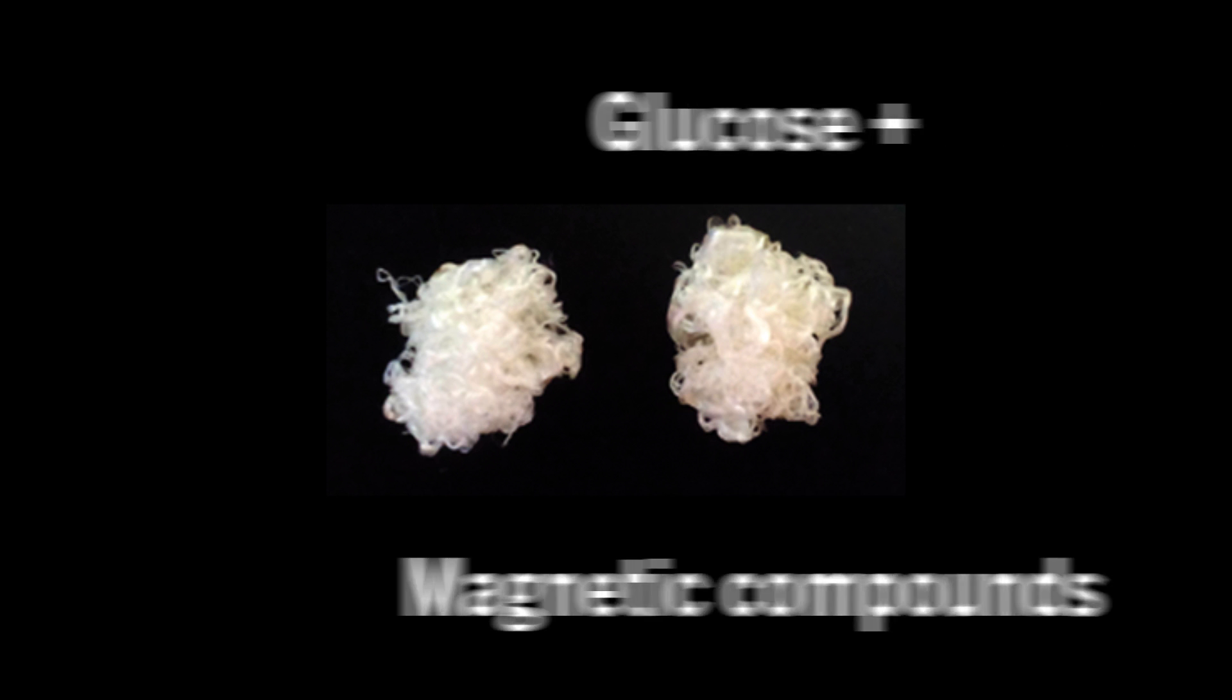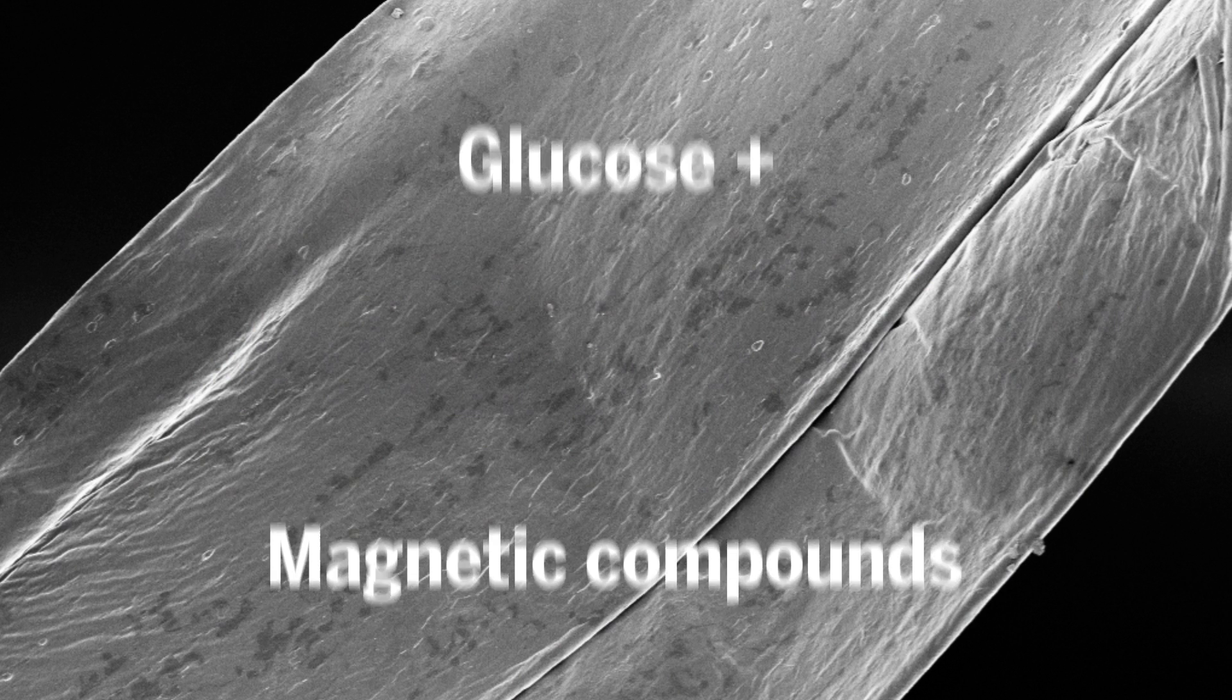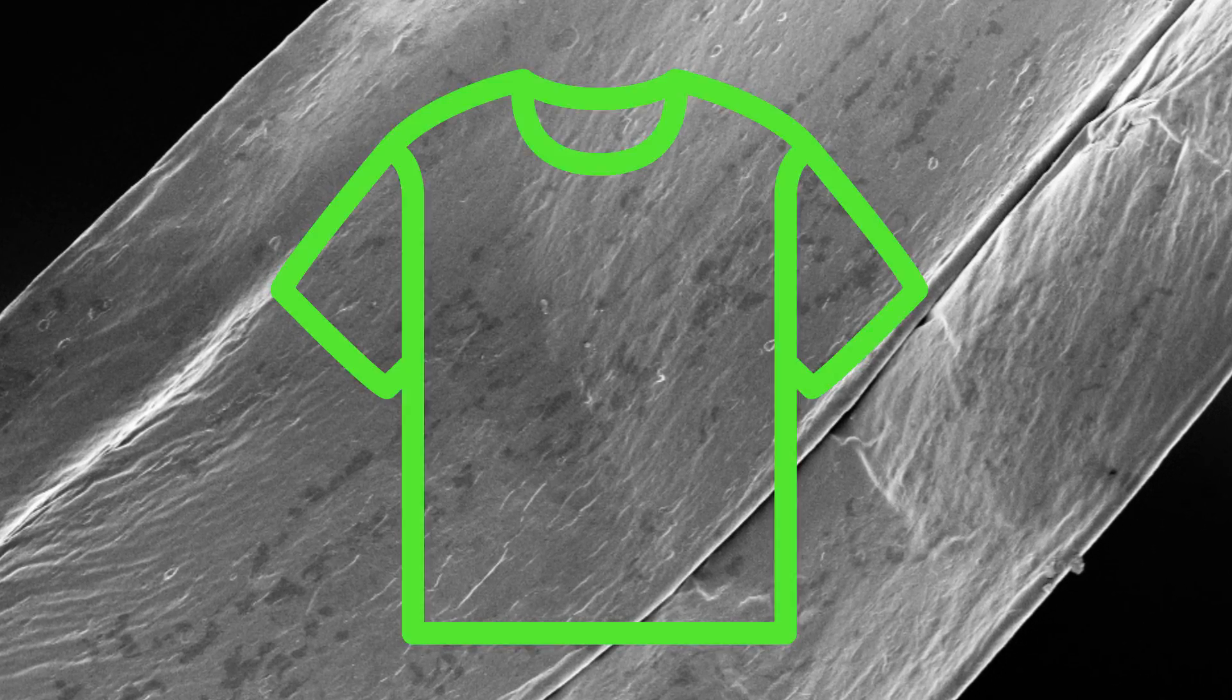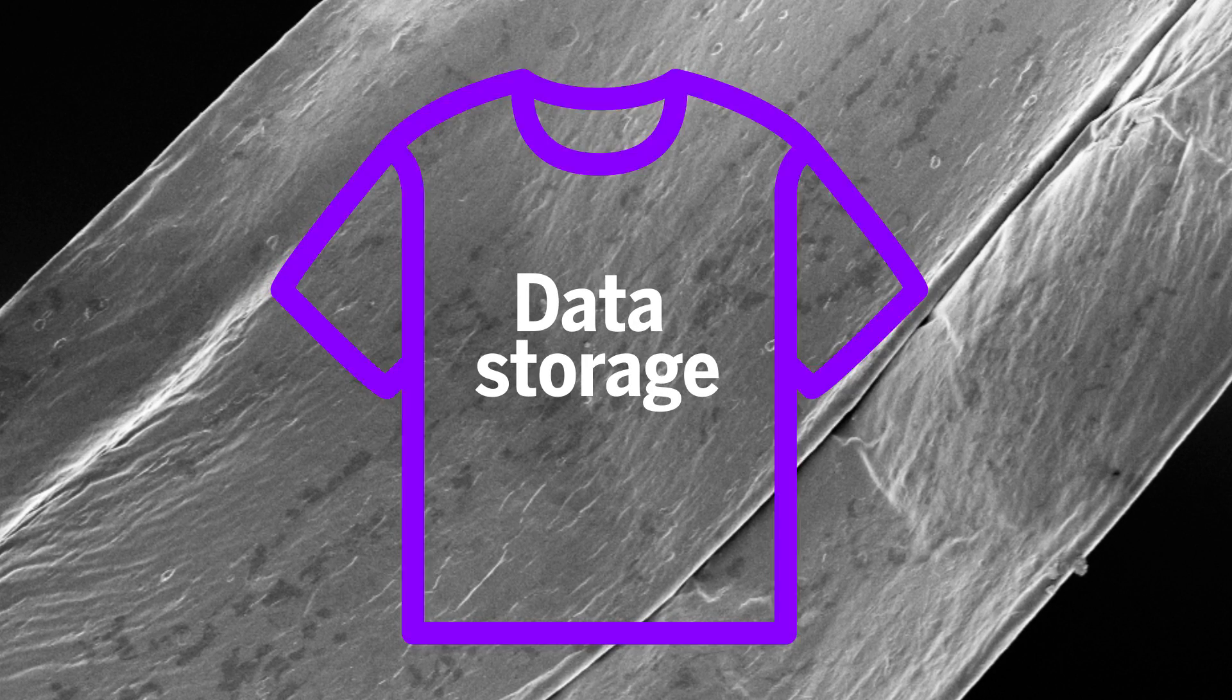The researchers also linked magnetic compounds to their sugars and showed that they too were incorporated into the fibers. In the future, that can enable clothing makers to build data storage capabilities right into garments.